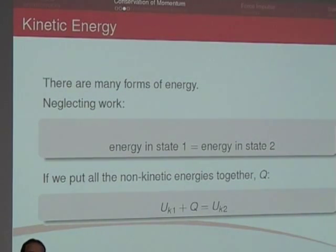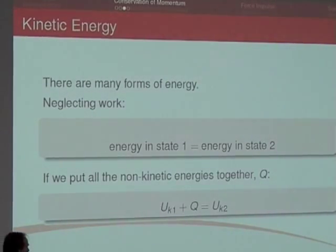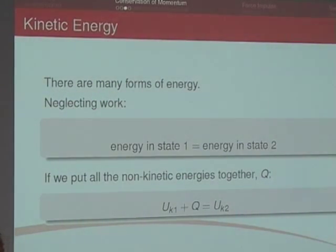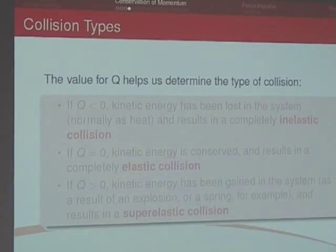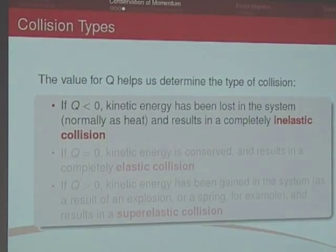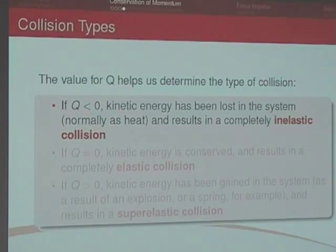If we accept that energy cannot be created nor destroyed, for any system, we can say that the energy in one state before something happens in the system internally must be equal to the energy in the second state, unless something acts on it from the outside. If we put all the non-kinetic energies together, that's the Q term, if we add those energies, we end up with a different kinetic energy term, U2. And that value for Q helps us to figure out what's going on in the collision. If Q is real and positive, U1 plus some number equals U2, then what that means is that we have lost some energy in the collision. And that results in a completely inelastic collision.